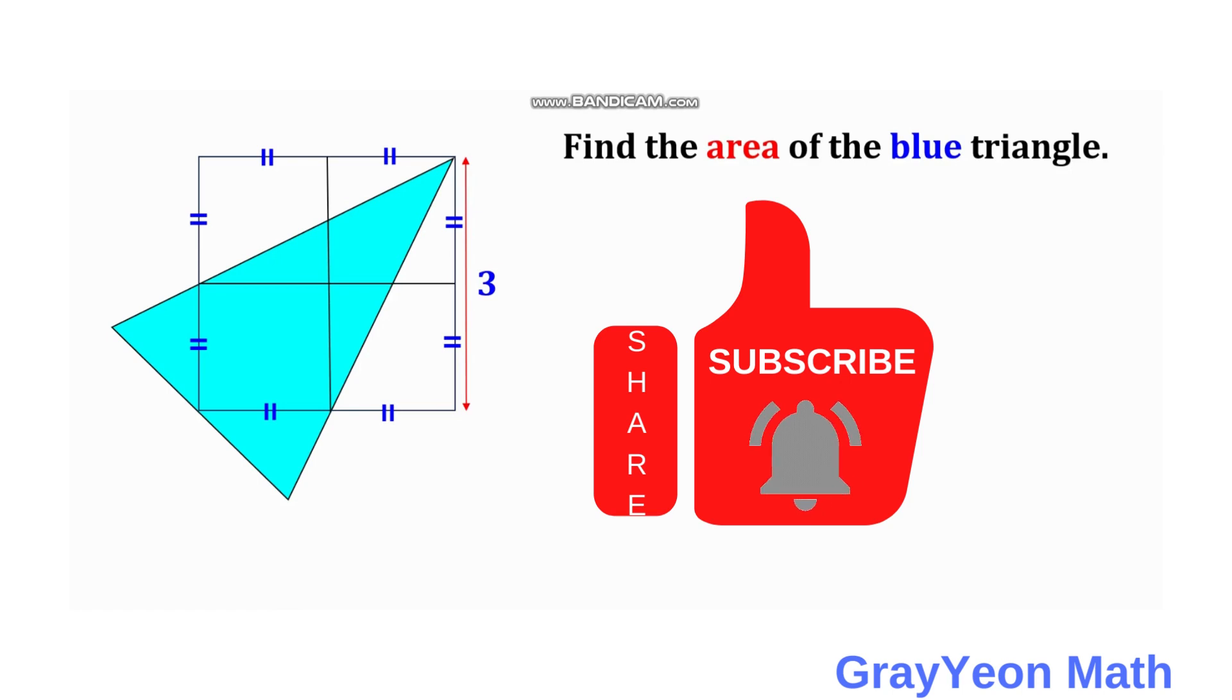We have a square which has a bisected length and a triangle is overlapping this square.